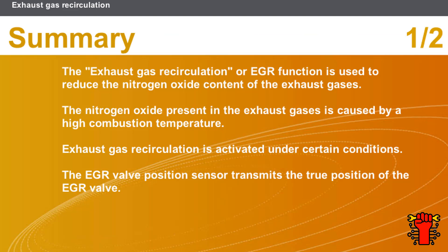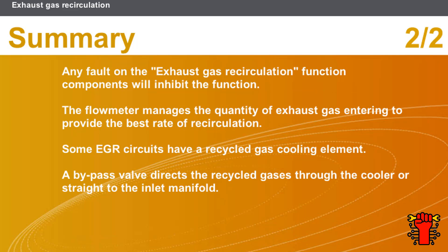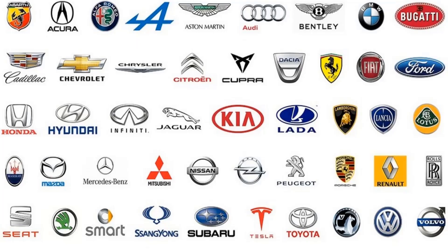In this section we covered the following points: the EGR function is used to reduce the nitrogen oxide content of the exhaust gases; nitrogen oxide in the exhaust gases is caused by a high combustion temperature; exhaust gas recirculation is activated under certain conditions; the EGR valve position sensor transmits the true position of the EGR valve; any fault on the EGR function components will inhibit the function; the flow meter manages the quantity of exhaust gas entering to provide the best rate of recirculation; some EGR circuits have a recycled gas cooling element; and a bypass valve directs the recycled gases through the cooler or straight to the inlet manifold.